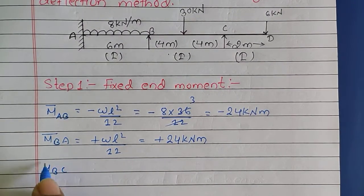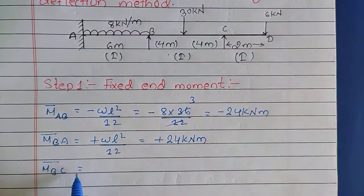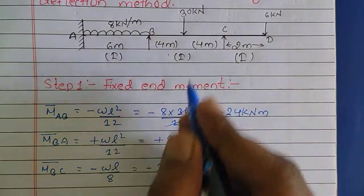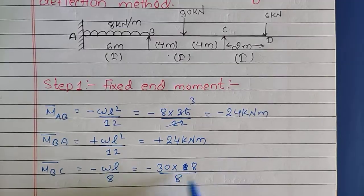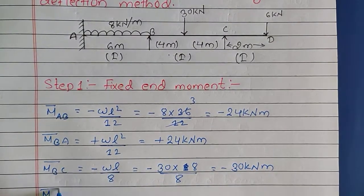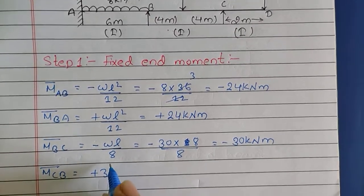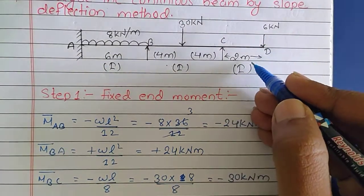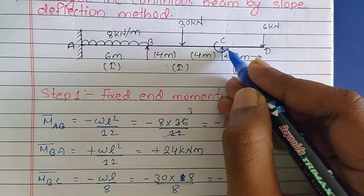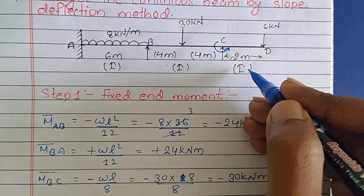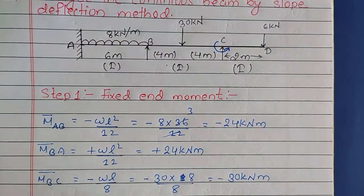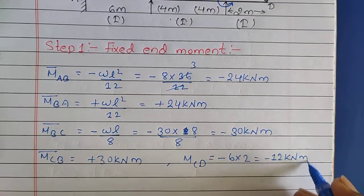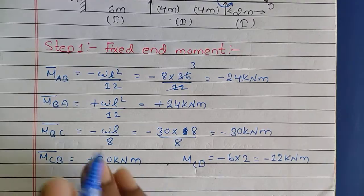M̄BC = -WL/8 = -30 × 8 / 8 = -30 kNm. Similarly, M̄CB = +30 kNm. For M̄CD, the load acts downward and the reaction at C to oppose the moment acts in the anticlockwise direction, so we use a negative sign. M̄CD = -6 × 2 = -12 kNm. I hope you have not faced any difficulties up to this step.